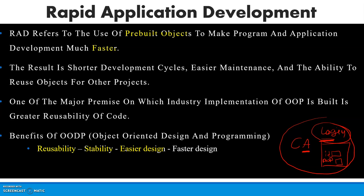Once we have built it, we can use it again and again. Some minor changes are needed, like database connectivity, but the design remains the same. We can reuse this component, and it gives stability — meaning every time I don't need to check for constraints like ID and password rules, such as password visibility. That gives us stability.